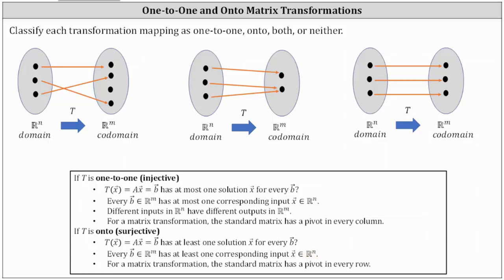Notice the only difference in the definitions is that for one-to-one, every vector B in our M has at most one corresponding input vector in our N — at most meaning zero or one. And a transformation is onto if every vector B in our M has at least one corresponding input vector in our N — at least meaning one or more.